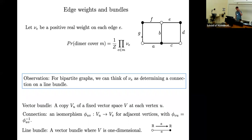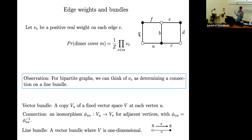I want to talk about a new point of view on these weights, which is not obvious, but it adds some geometry to the problem. Rather than think about these positive real numbers associated to the edges as just edge weights which change the dimer measure, I want to think of them as determining a connection on a line bundle.